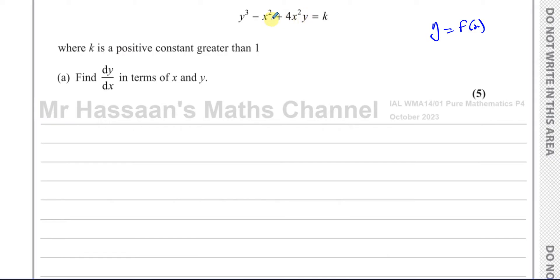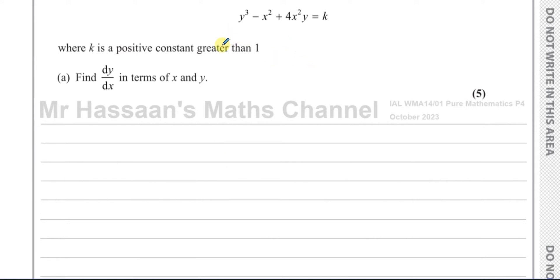You could make x the subject quite easily, but it gets complicated — you'd have k's and square roots in there. There's a much easier way called implicit differentiation. It's important to understand what it is, not just memorise the procedure. Maths has logical procedures to follow; every step should make sense — no weird magical stuff happening.